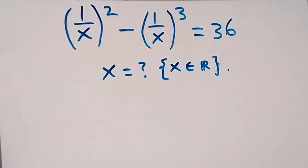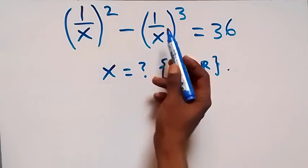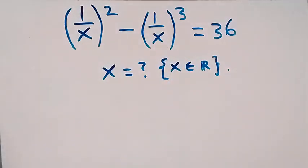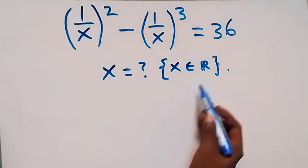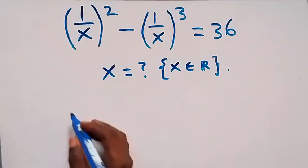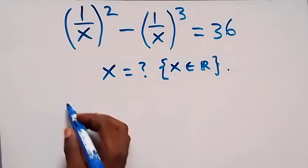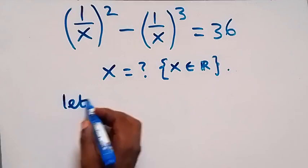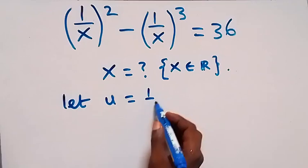Hello, you are welcome. How to solve this nice algebra problem: given 1 over x raised to power 2 minus 1 over x raised to power 3 equals 36, where x is a real number. Let's represent 1 over x as a letter — let u be equal to 1 over x.